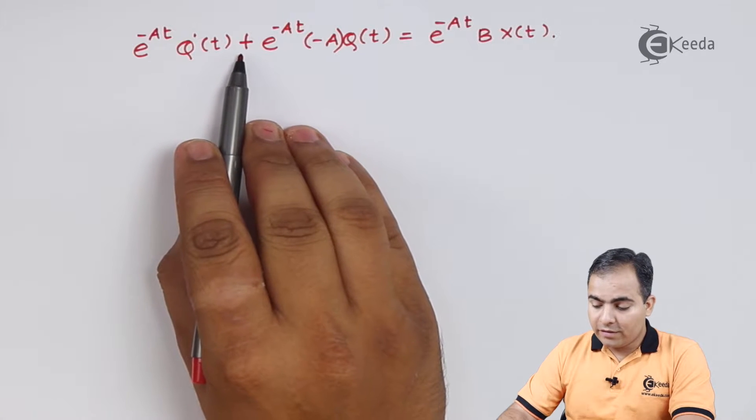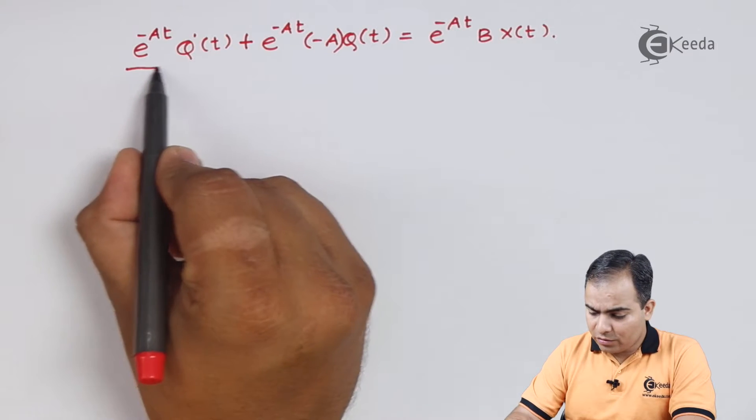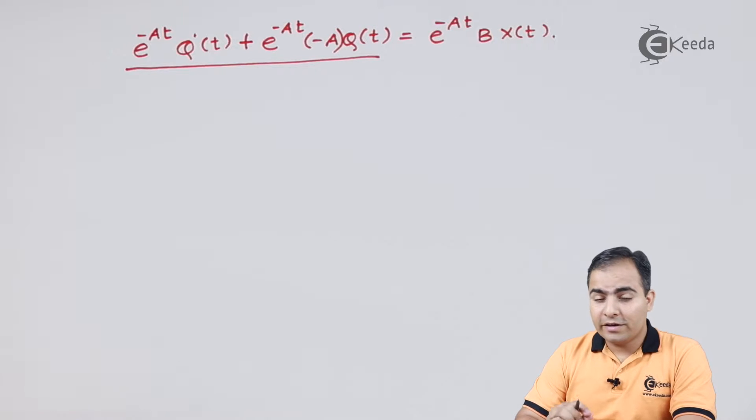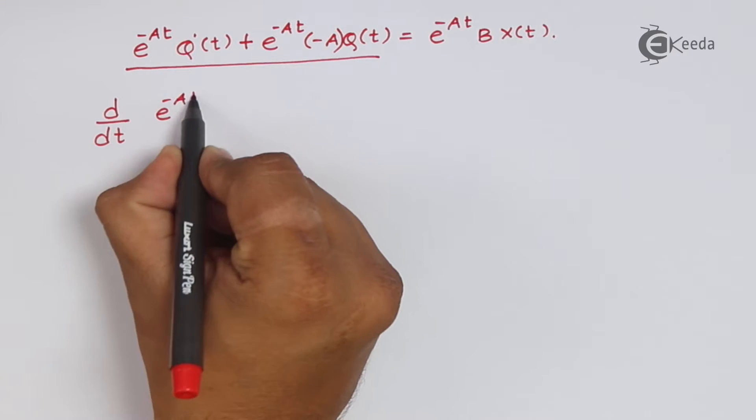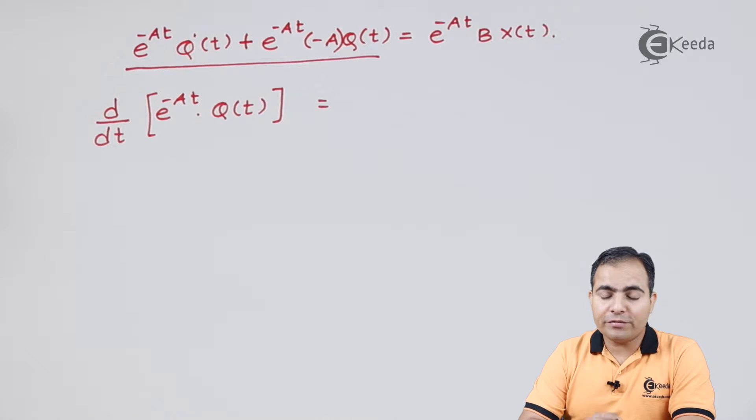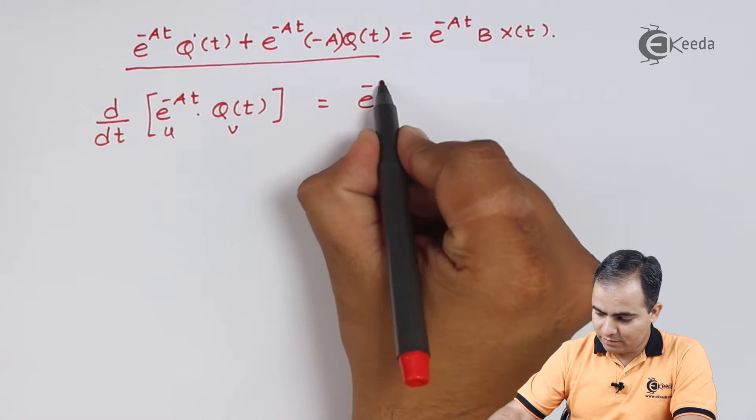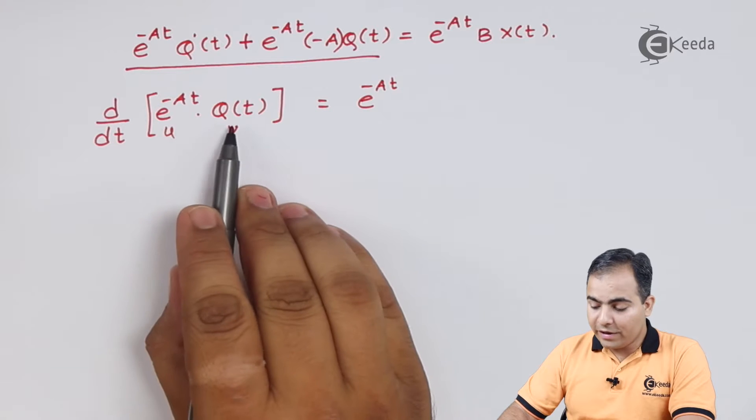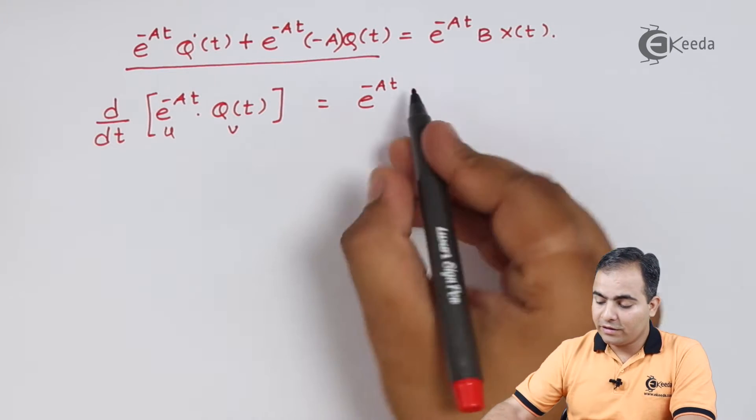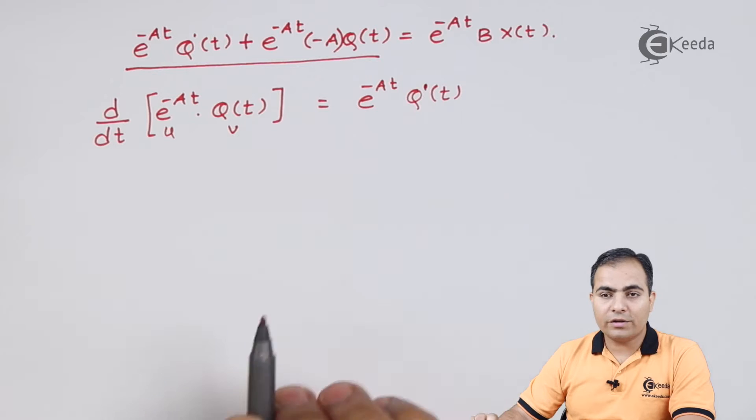Look at what I have done. I have taken minus sign along with A, so this sign changes to plus. Now basically this whole left hand side part is nothing but differentiation of e to the power minus At with q(t). Now we will use u into v derivative formula. u into derivative of v plus v into derivative of u is the formula. So let's say this is my u and this one is my v. Now u into derivative of v means first order differentiation I am going to write.